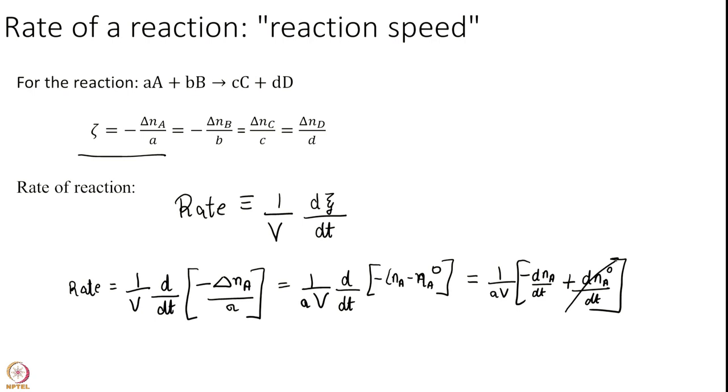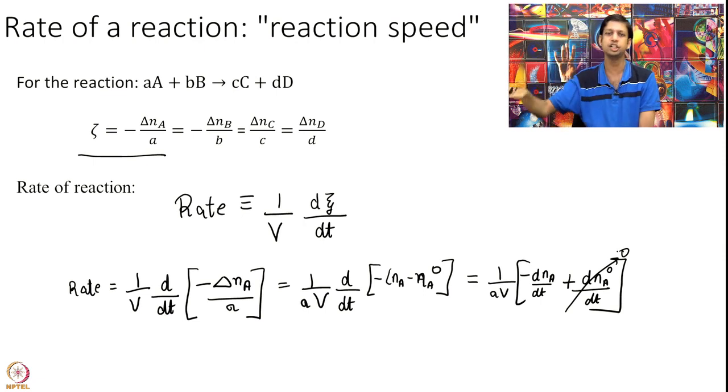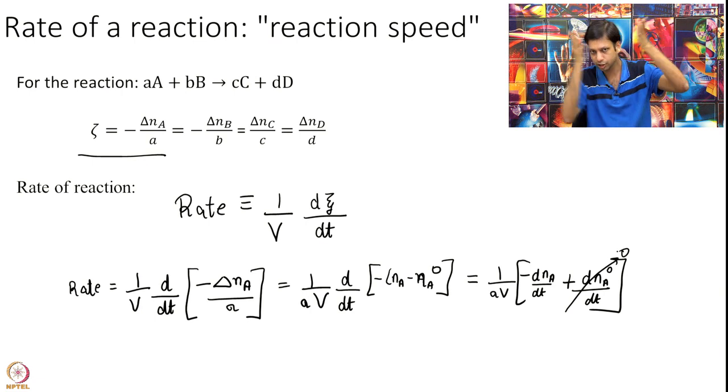What you notice that this is 0 because NA naught is not a function of time. It is simply the number of moles at initial time. That was just a number. The actual change is NA. So, this is 0. At the end I get 1 over volume into 1 over a minus dNA by dt.